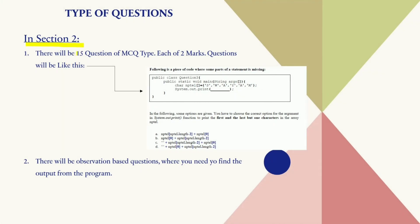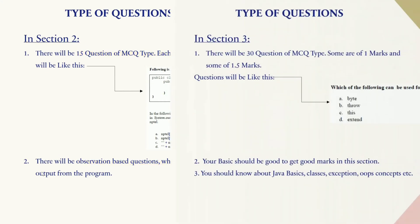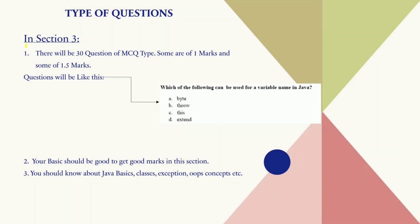Section 2 consists of 15 questions worth 30 marks. This section has observation-based questions where you need to find the output of a given program. These questions test your ability to read and understand code, as well as your knowledge of programming concepts such as variables, loops, and conditional statements. To prepare, make sure you have a solid understanding of basic programming concepts and practice reading and analyzing code.